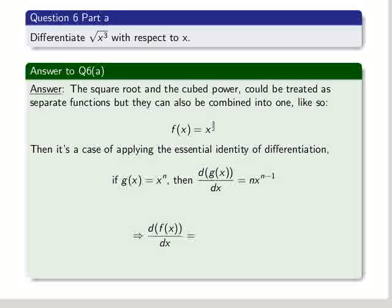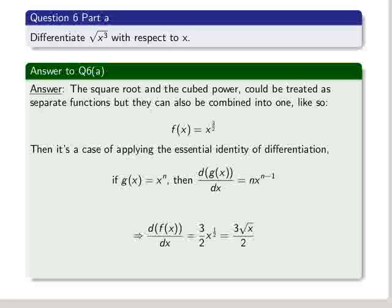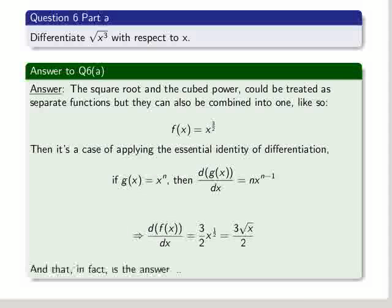So in this case, we differentiate with respect to x, and we get 3 over 2 times x to the half, which is the same as 3 times the square root of x all over 2. And that is the answer. Quite a short one, that one.